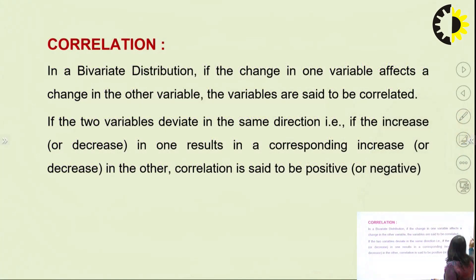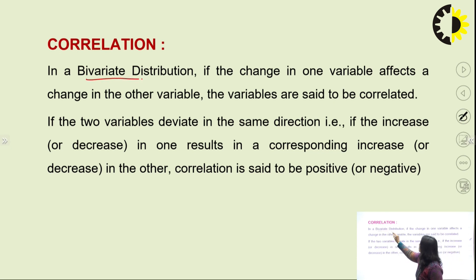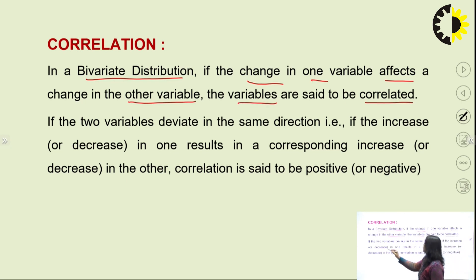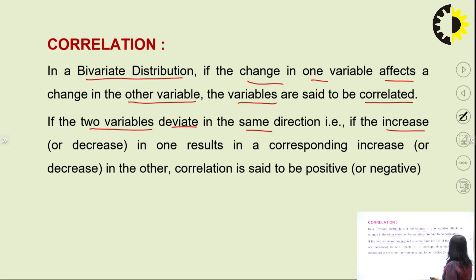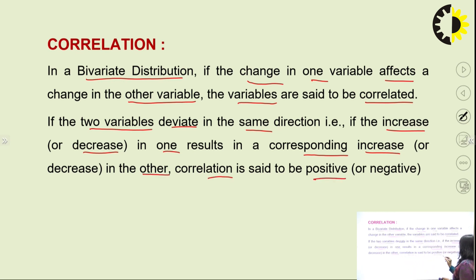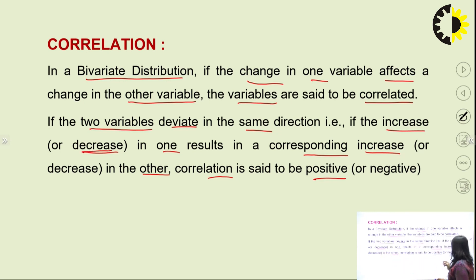First of all, I would like to define what is correlation. Correlation in a bivariate distribution: if change in one variable affects change in another variable, then the variables are said to be correlated. If two variables deviate in the same direction — either both increasing or both decreasing — that is positive correlation. But if one increases while the other decreases, then that is a negative correlation.